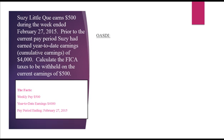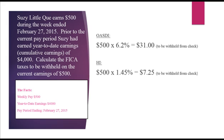How to calculate FICA for Susie: For OASDI, $500 times 6.2% equals $31 to be withheld from the employee paycheck. For HI, $500 times 1.45% equals $7.25 to be withheld from the employee check. Total FICA to be withheld is $38.25. The employer will also match the $38.25.